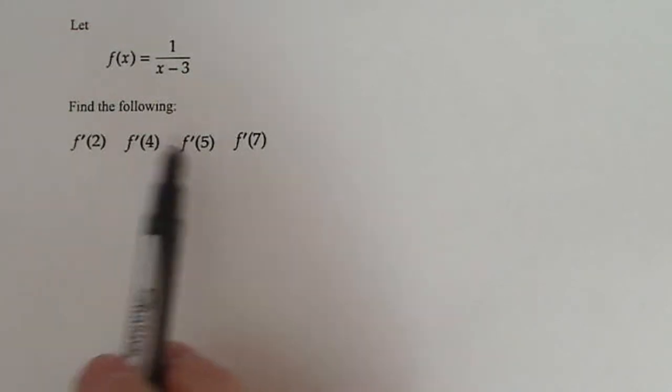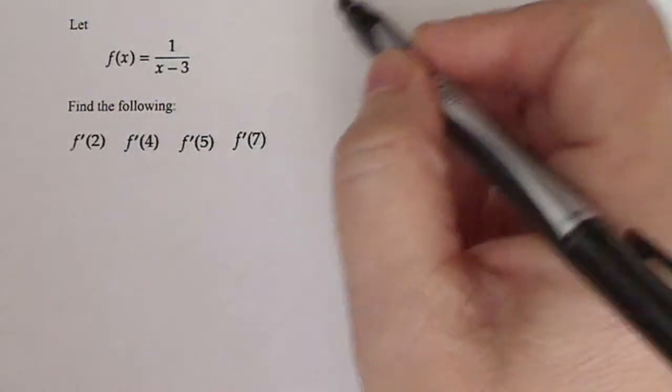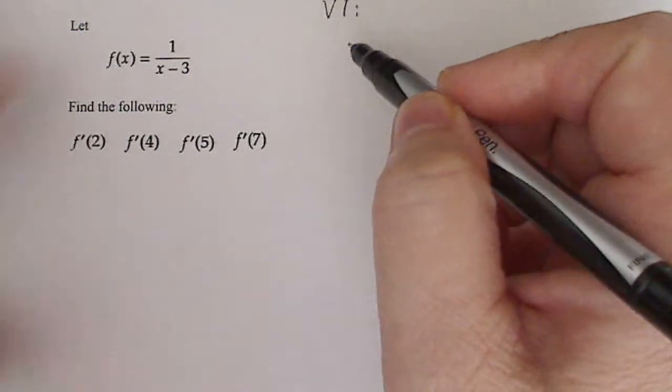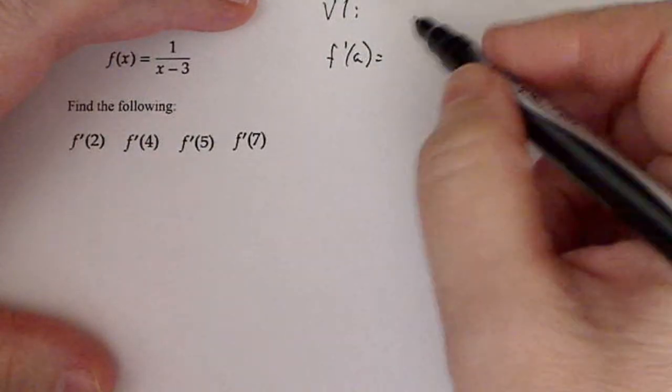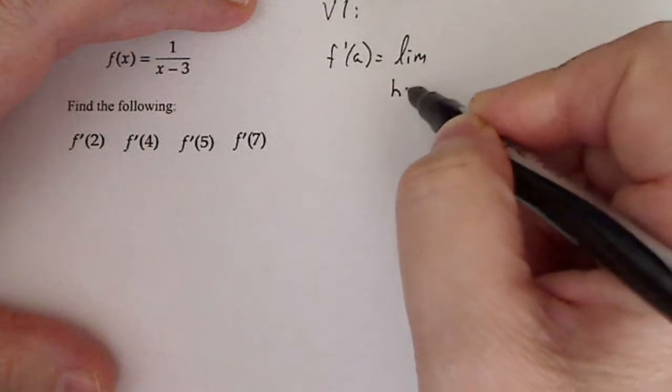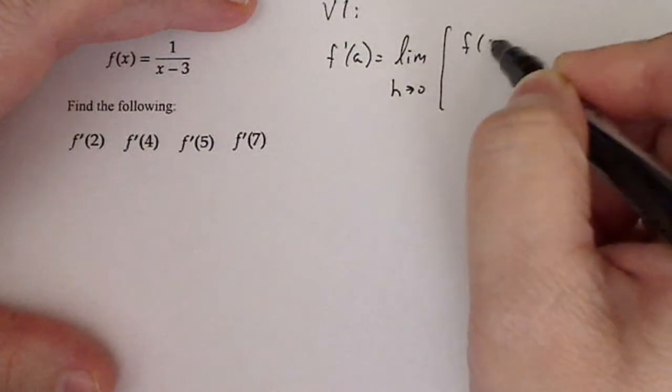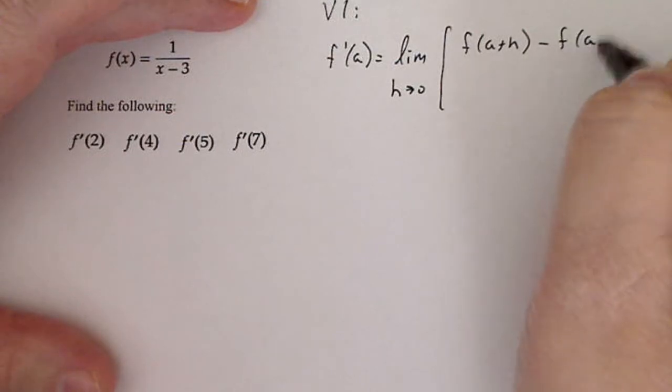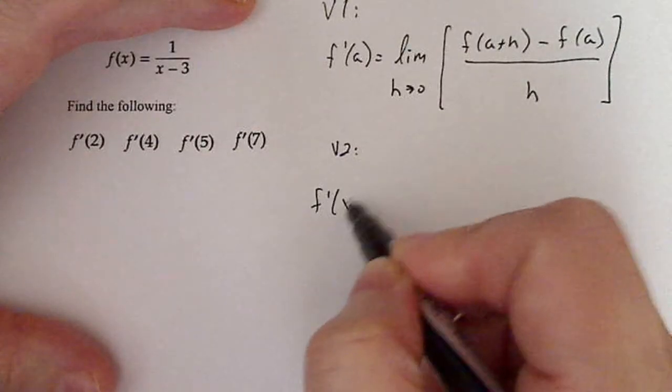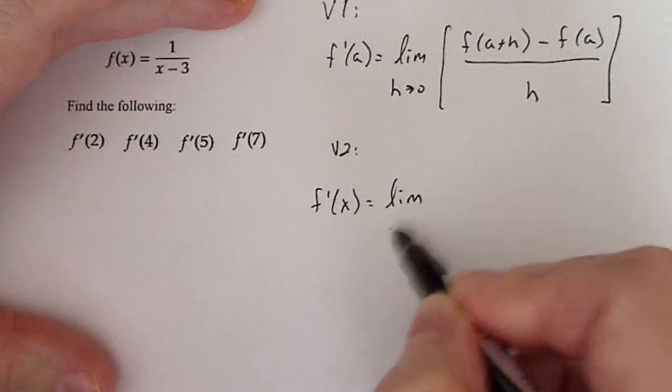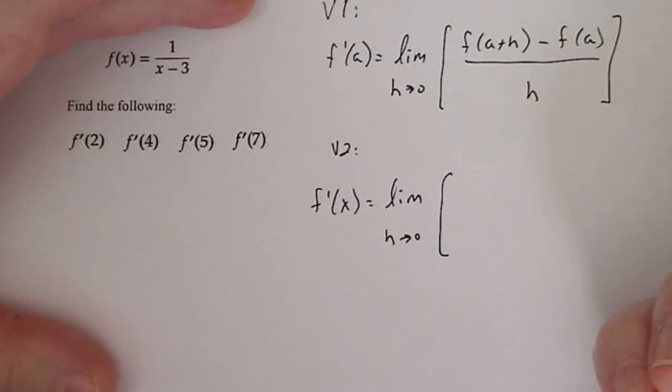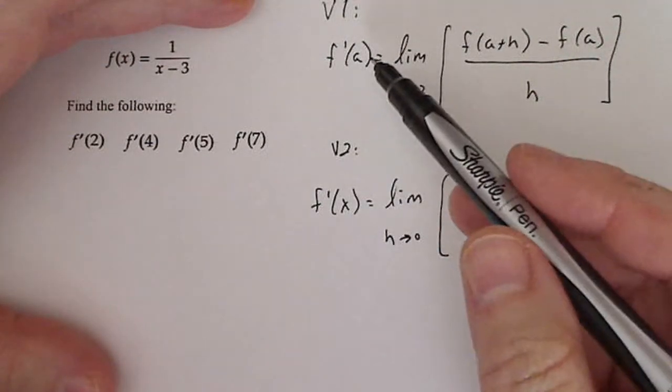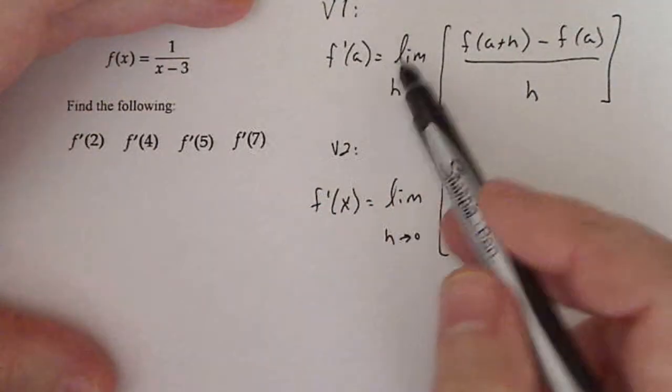So, considering that we want to find derivatives at points, many students will go to version one of the limit definition and use this formula here, f prime of a, which is a derivative at the point x equal a, limit as h goes to zero, f of a plus h minus f of a all over h, versus version two, which is the derivative function. If I calculate the derivative function, that means I can put in any value I want for x and I can get the derivative at a point. So if I use this formula,